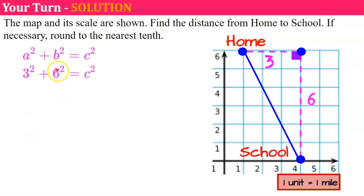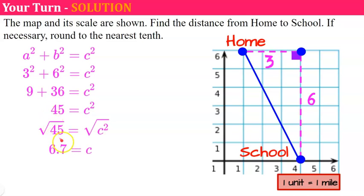3 squared plus 6 squared will equal our distance from home to school squared. 3 squared is 9. 6 squared is 36. Add them together, we get 45. Take the square root of each side, and the square root of 45 is 6.7. So the distance from home to school is 6.7 miles because each unit represents 1 mile.